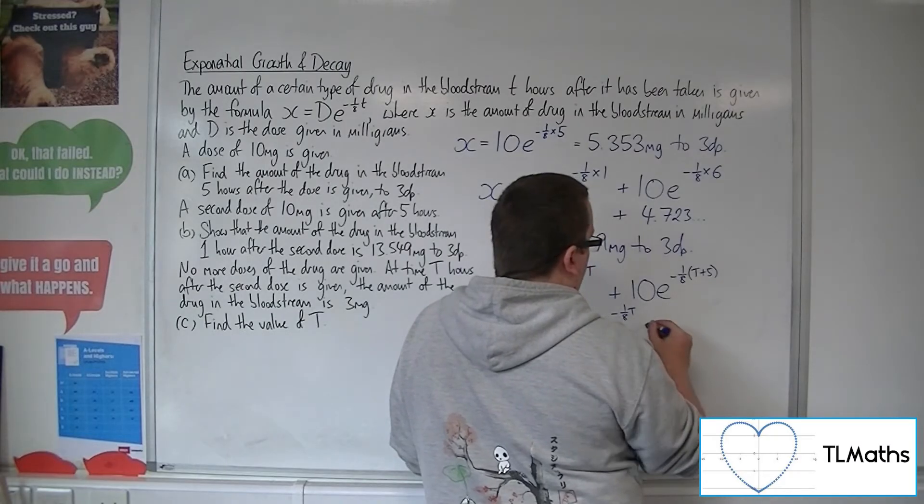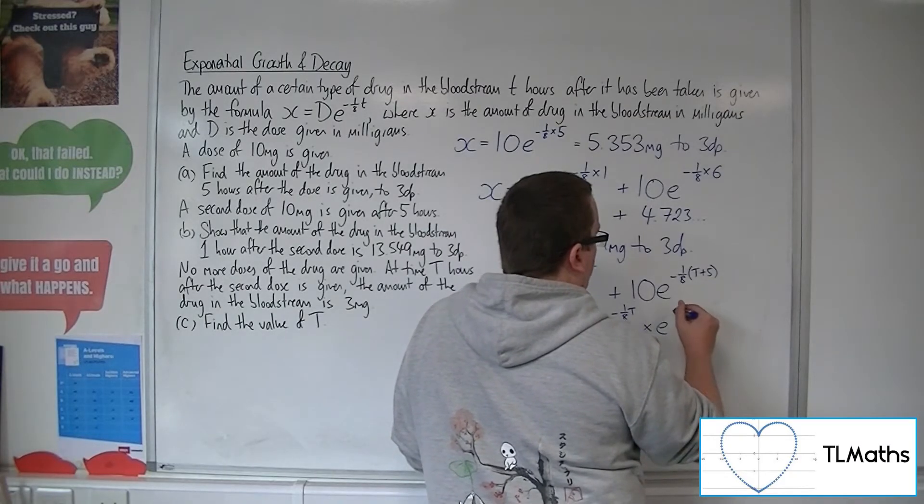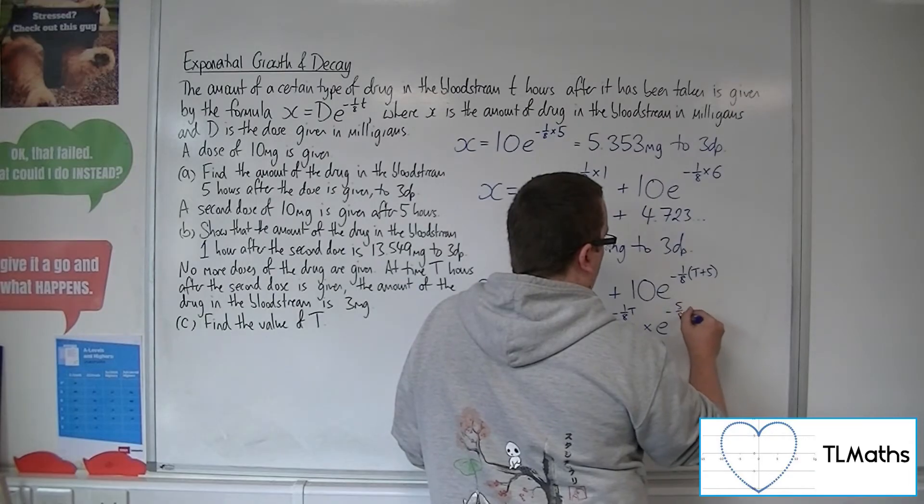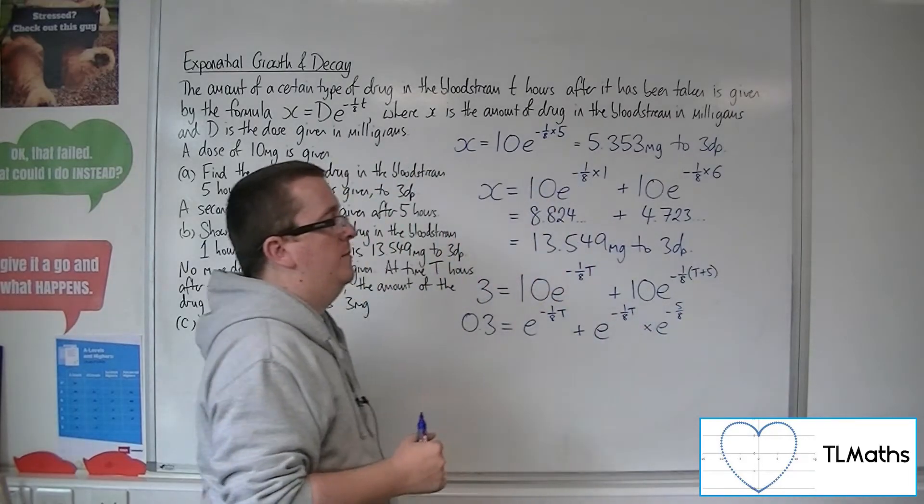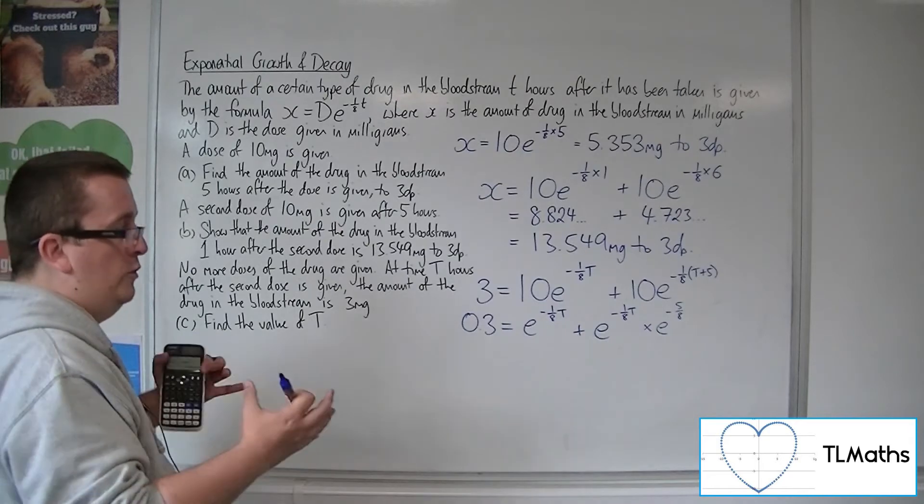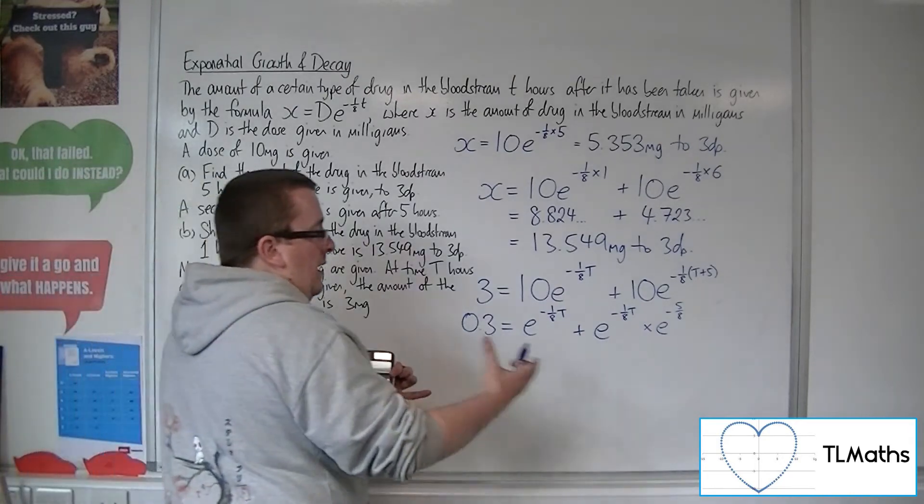And because indices add, this is the same as having e to the minus five-eighths multiplied by the e to the minus one-eighth T. Okay, using your indices knowledge to really break it apart.